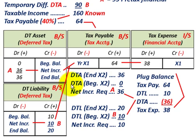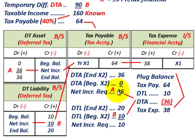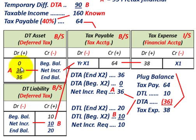Moving to our deferred tax asset and liability — for the deferred tax asset we're looking for the net increase for the year. At the end of the year we had $36,000; at the beginning of the year we had zero. So the net increase required for the year is $36,000. We debit the deferred tax asset for $36,000, and this increase reduces our tax payable credit balance.